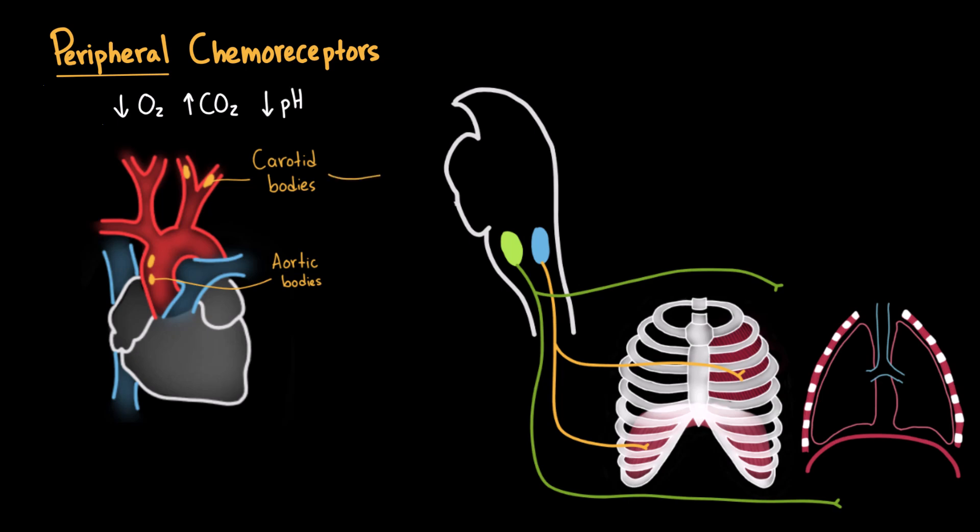Signals from the carotid bodies are transmitted via the glossopharyngeal nerve, also known as cranial nerve 9, and from the aortic bodies via the vagus nerve, or cranial nerve 10, both targeting the medullary respiratory centers where they stimulate the respiratory centers.